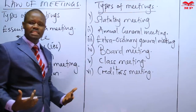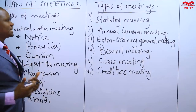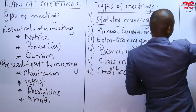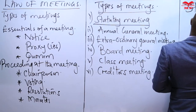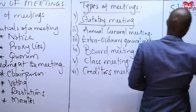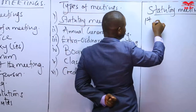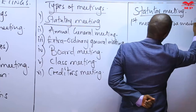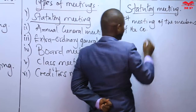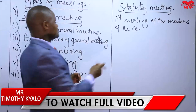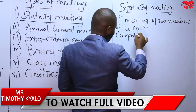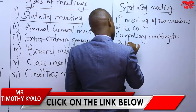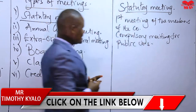For each meeting, we want to know who is holding it, when it is held, and what its objective is. Beginning with the statutory meeting — the statutory meeting is the first meeting of the members of the company. It is a compulsory meeting for public companies.